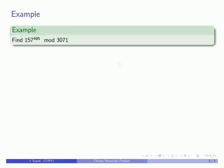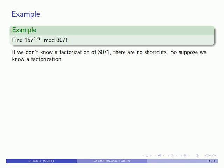For example, let's say I want to find 157 to the power of 495 mod 3071. If I don't know a factorization of 3071, I'm stuck. I'll have to find 157 to the power of 495 the hard way. On the other hand, if I do know that 3071 is 37 times 83, then I have a chance of simplifying this problem.